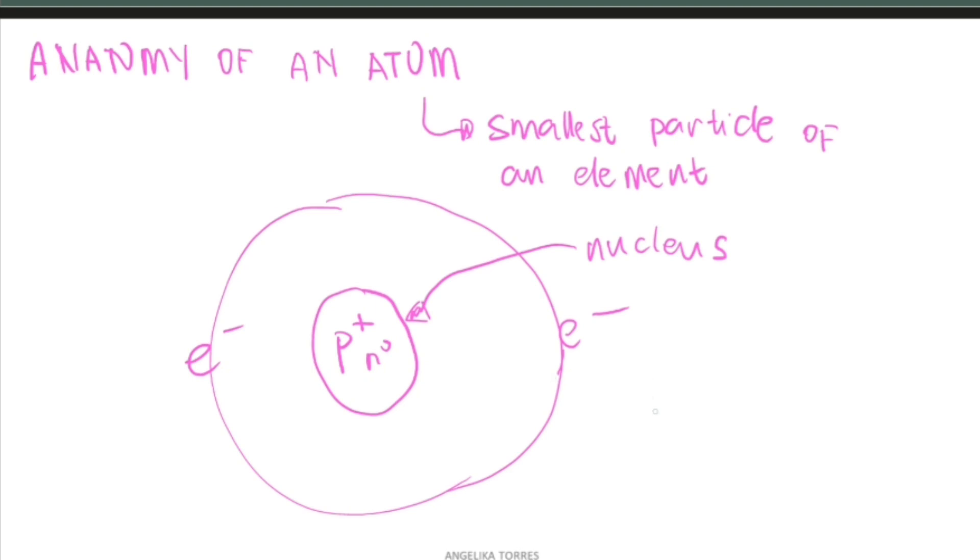Proton has a positive charge, while neutron has no charge, and electron has a negative charge.